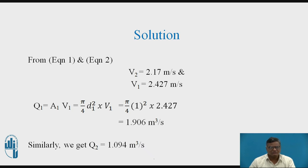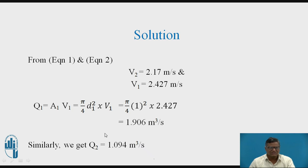Solving the two equations gives V2 = 2.17 m/s and V1 = 2.427 m/s. Then discharge through branch one: Q1 = A1·V1 = (π/4)·D1²·V1 = 1.906 m³/s. Similarly, Q2 = A2·V2 = 1.094 m³/s. As a check, Q1 + Q2 = 1.906 + 1.094 = 3 m³/s, which equals the total discharge through the main pipe — confirming the answer is correct. Note that the coefficient of friction and L1, L2 were given but cancelled out.